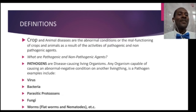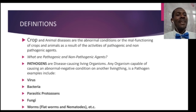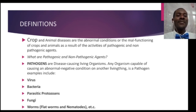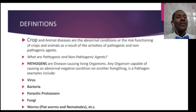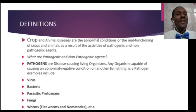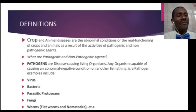What are pathogenic and non-pathogenic agents? Pathogens are disease-causing living organisms. Any organism capable of causing an abnormal negative condition on another living thing is a pathogen. Typical examples include viruses, bacteria, parasitic protozoans, fungi, flatworms, and nematodes. These are parasitic in nature and they can inflict diseases on the bodies of other living things, even in farm animals and farm crops.